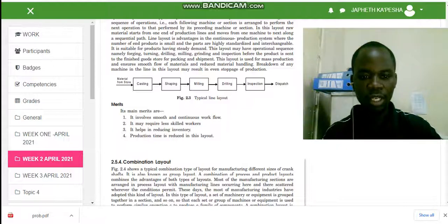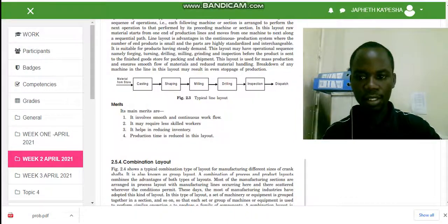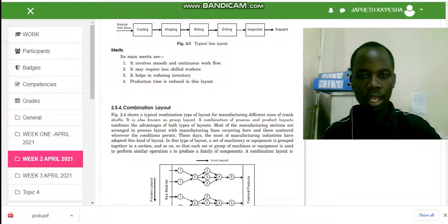The last type of layout we have in a plant system is combinational layout. A combinational layout typically combines the three layouts we've been talking about: the line, the fixed, and the functional layout. It combines the advantages of both layouts that we have just discussed in our previous videos.